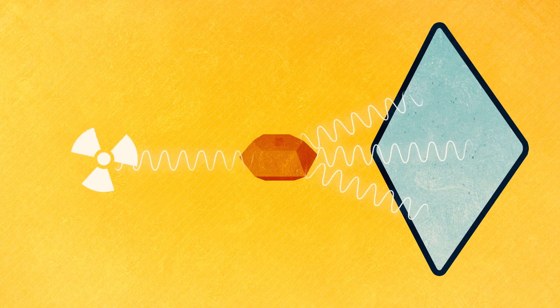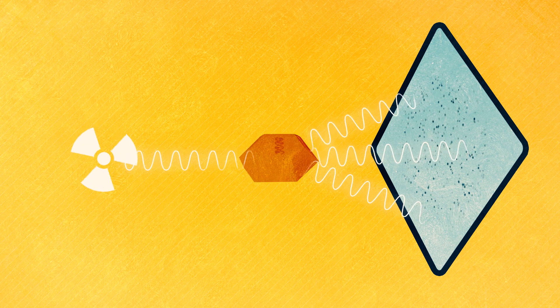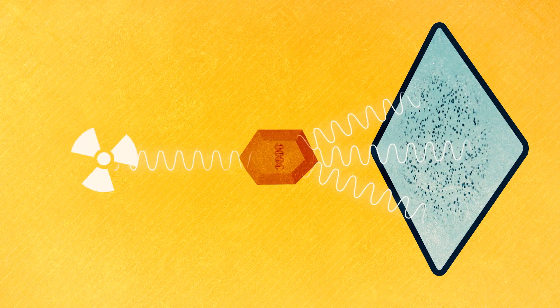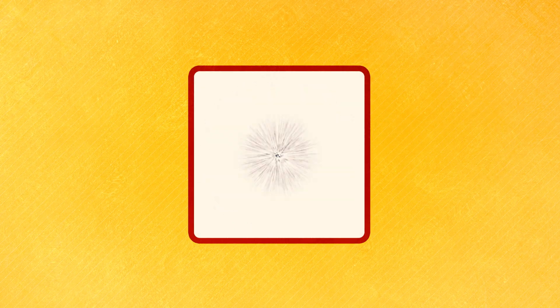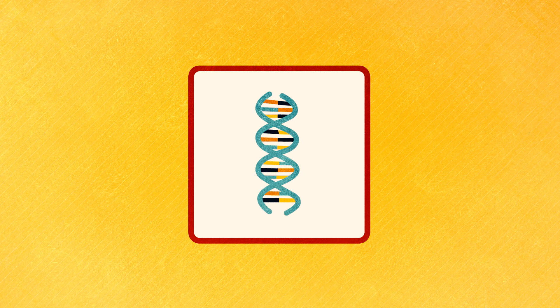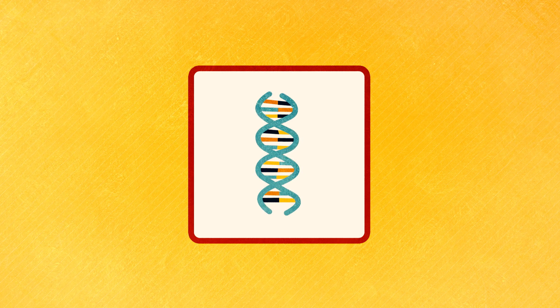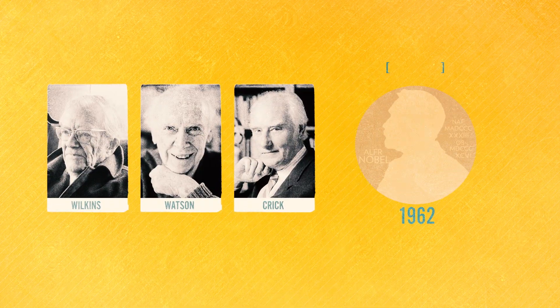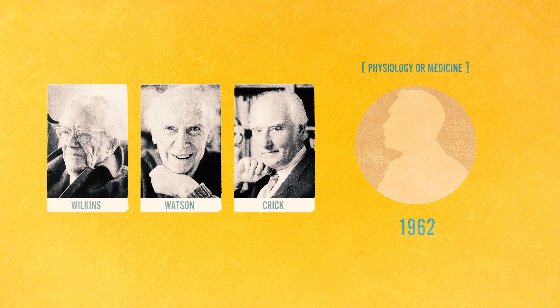The first view into the structure of DNA was achieved by the X-ray diffraction analyses conducted by Rosalind Franklin and Maurice Wilkins. Based on Franklin and Wilkins' research, James Watson and Francis Crick developed a model of DNA. They concluded that DNA must have a structure like a ladder, twisted around itself in spiral form. Wilkins, Watson and Crick received the Nobel Prize in 1962.